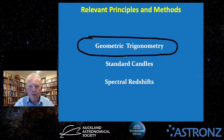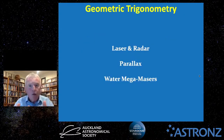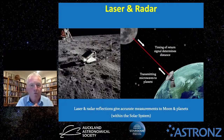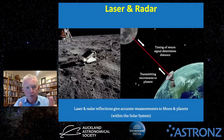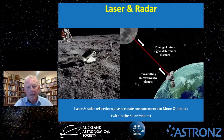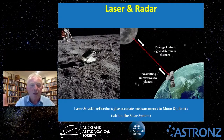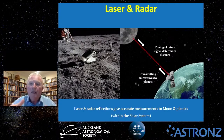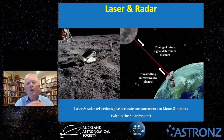Let's talk about geometric trigonometry and how astronomers measure distances in space. There are three main ways: laser and radar, parallax, and water megamasers. With lasers and radar, astronomers fire laser beams up to reflectors on the surface of the moon that the Apollo astronauts left behind. They measure the time it takes for the light to travel to the moon and back, and knowing the speed of light accurately, they calculate the distance. Similarly, they transmit microwaves to the surfaces of planets in the solar system and measure the return time. This is really good for measurements within the solar system but not much beyond.